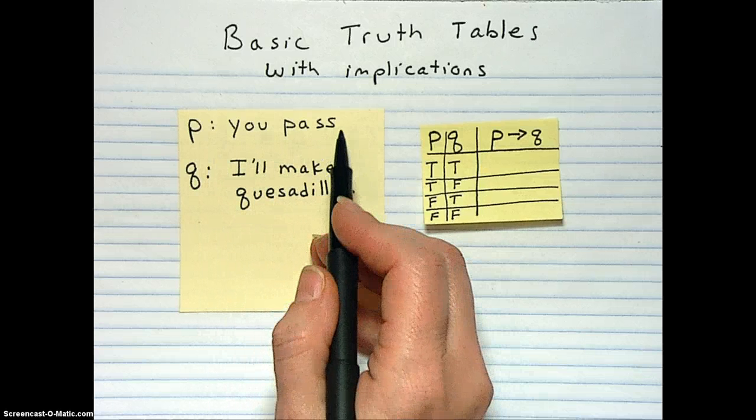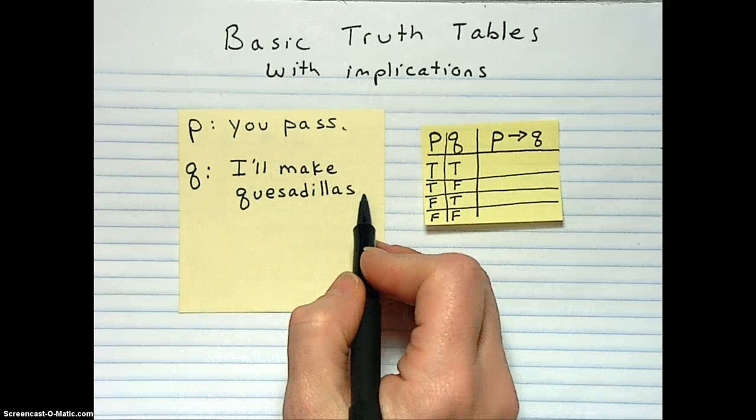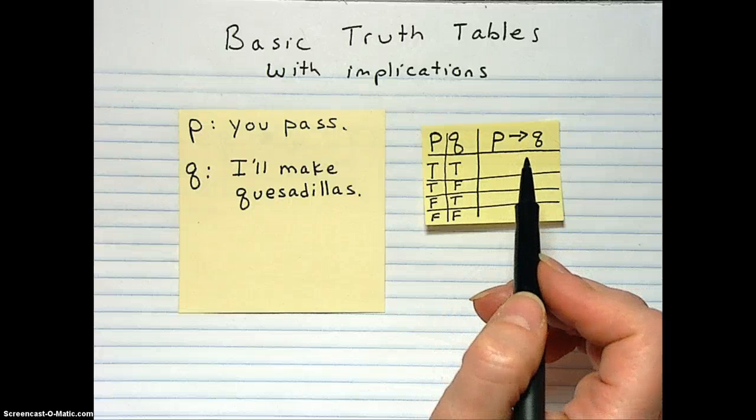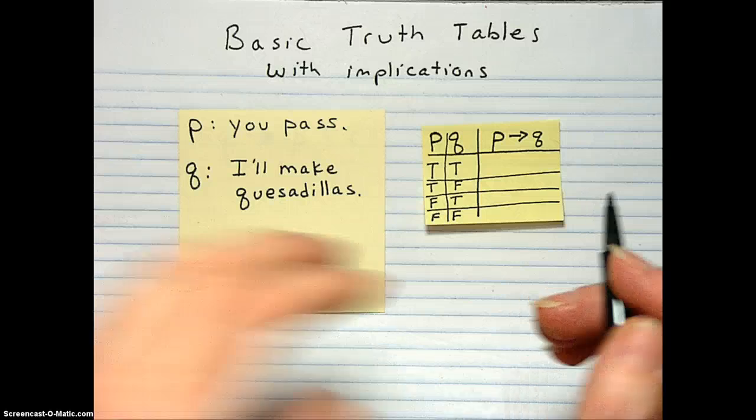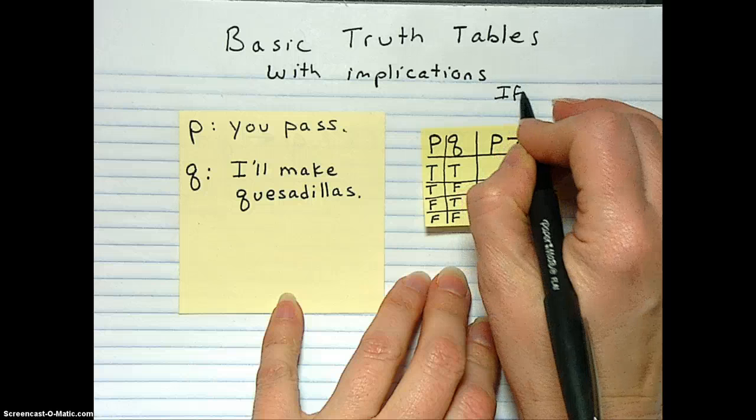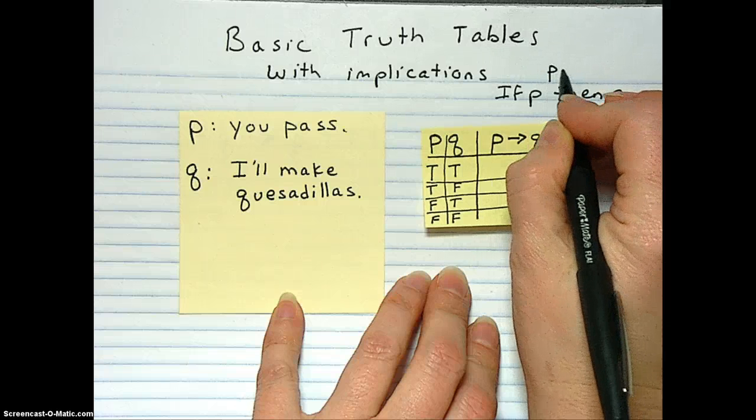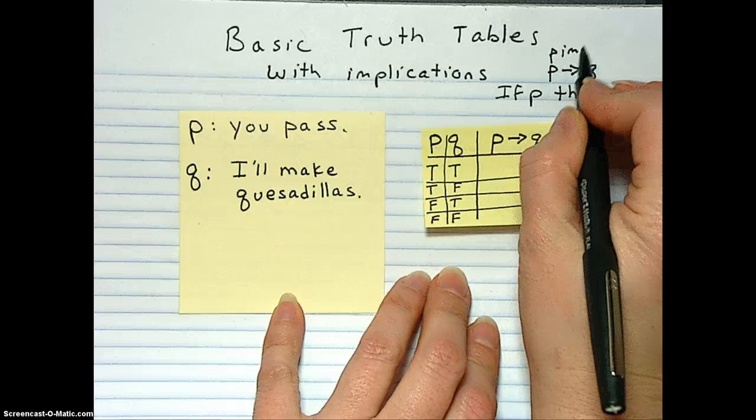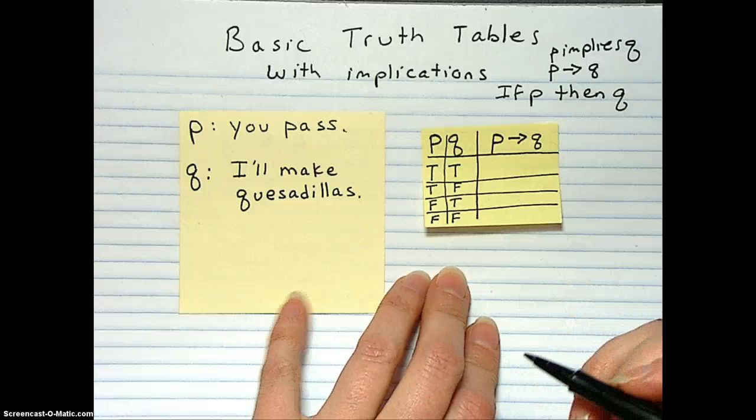So our two statements are P, which stands for you pass, and Q, I'll make quesadillas. And this thing is an implication, the arrow thing. It's an implication, which is kind of like a promise or an if-then. It can go if P then Q, which is the same thing as P arrow Q, or P implies Q. So there's a bunch of different ways to look at it, but it's called the implication. It's an if-then, and it's a promise.